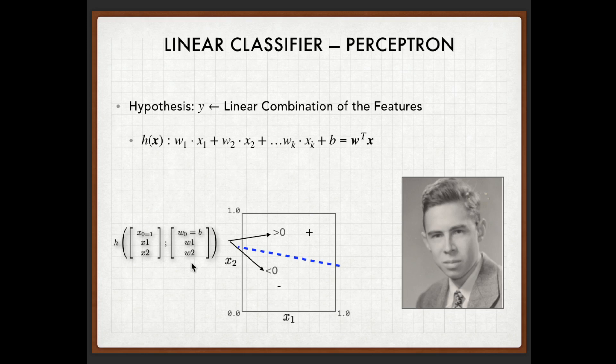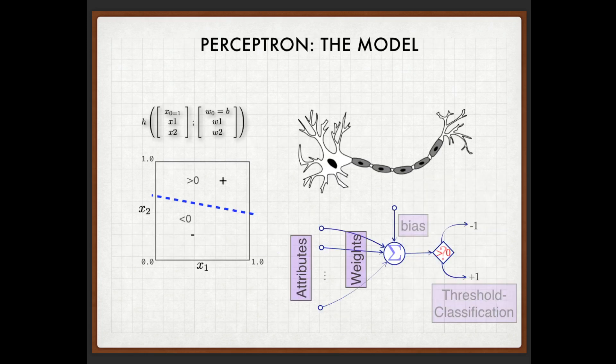Believe it or not, this is perhaps one of the earliest intelligent algorithms that has the capability of learning from data. It was motivated by the biological neuron.